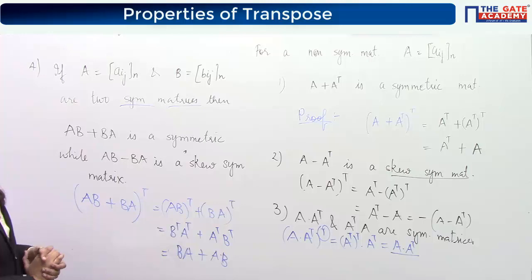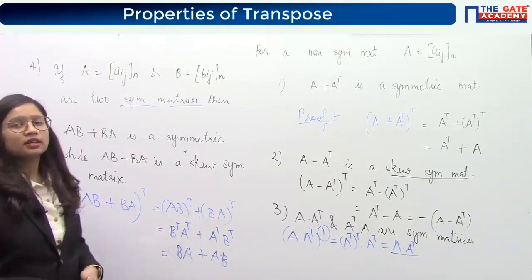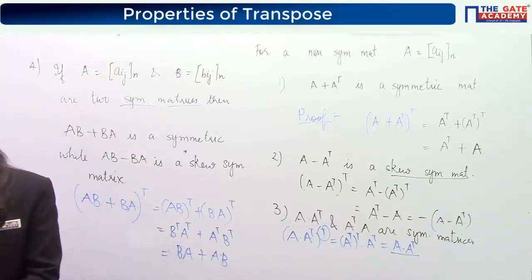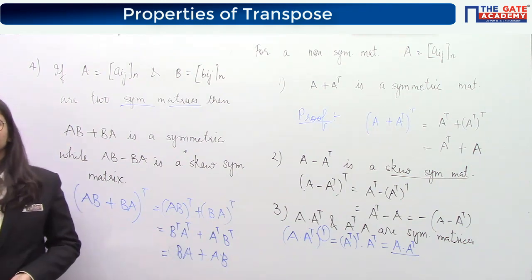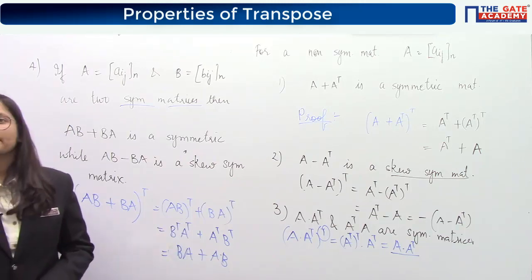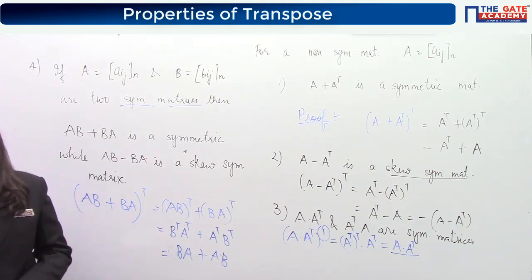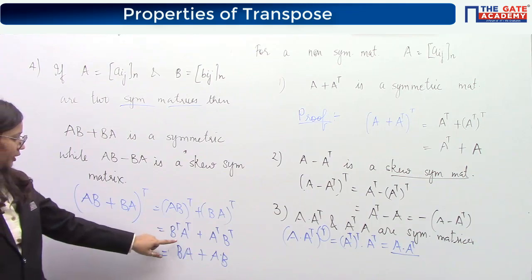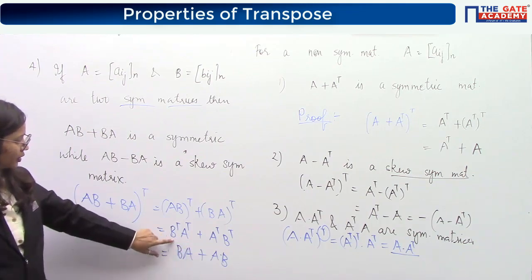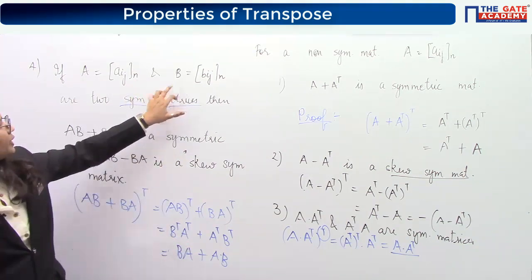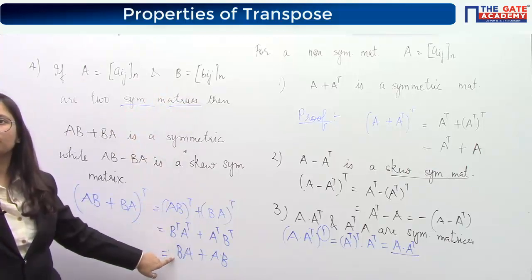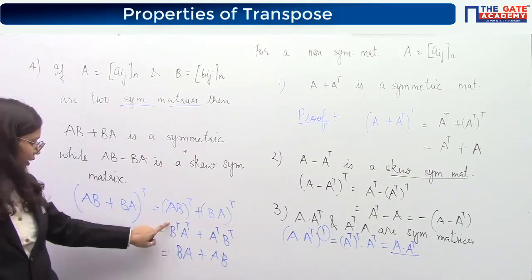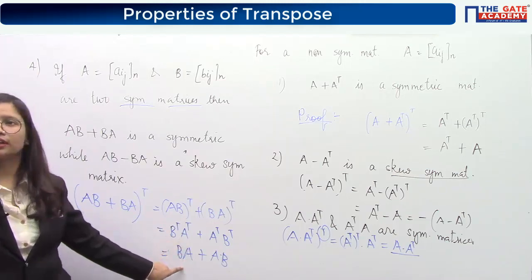These are some properties regarding symmetric matrices. Now, a student asked why B transpose A is written as BA. The reason is that B is a symmetric matrix, so B transpose equals B by definition. Similarly A transpose equals A. That is why we can substitute directly.